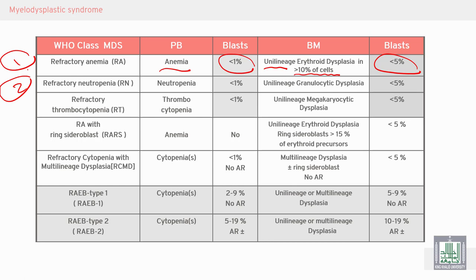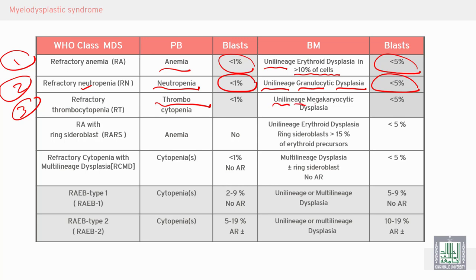Another condition called refractory neutropenia — neutropenia in the peripheral blood, with less than 1% blasts in the peripheral blood and less than 5% in the bone marrow. It is also unilineage, but here not in erythroid; it is in granulocytic — granulocytic dysplasia leading to neutropenia.